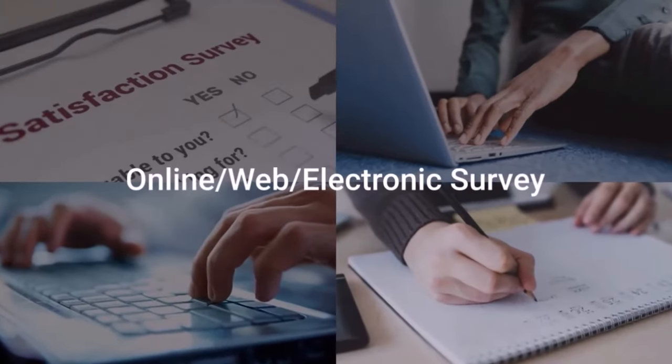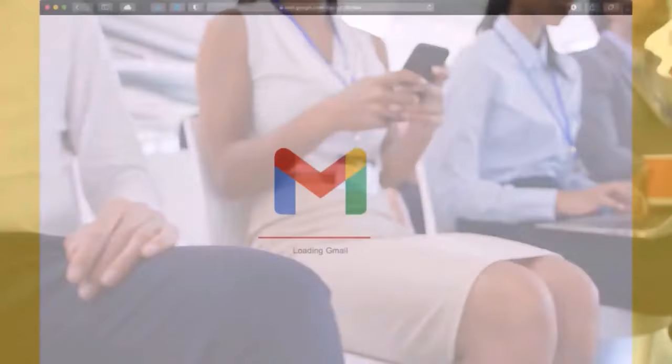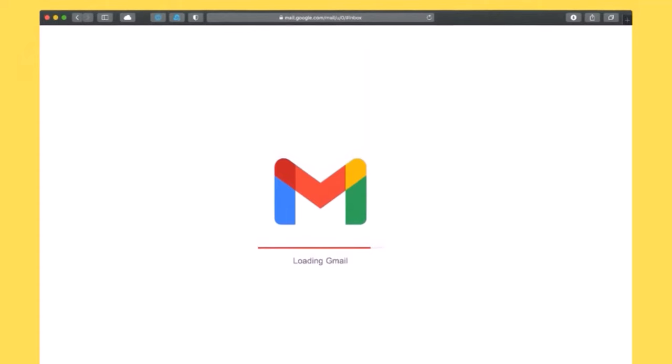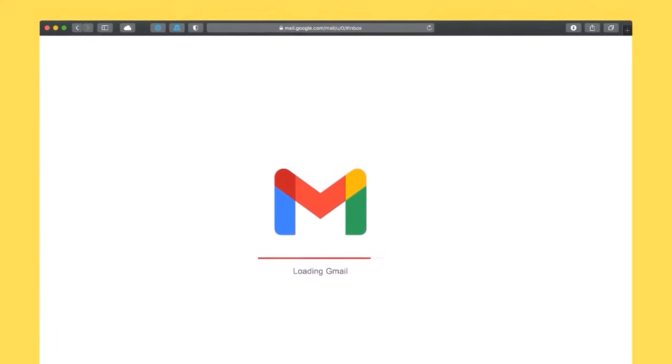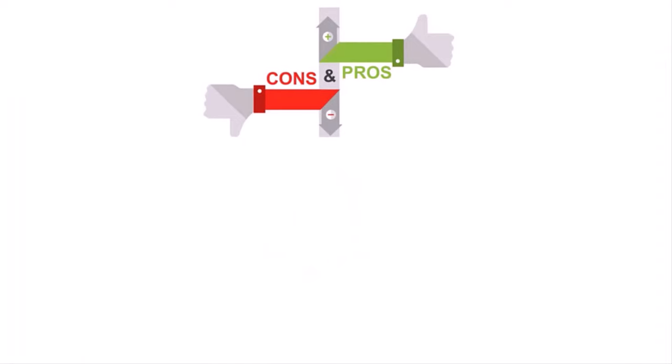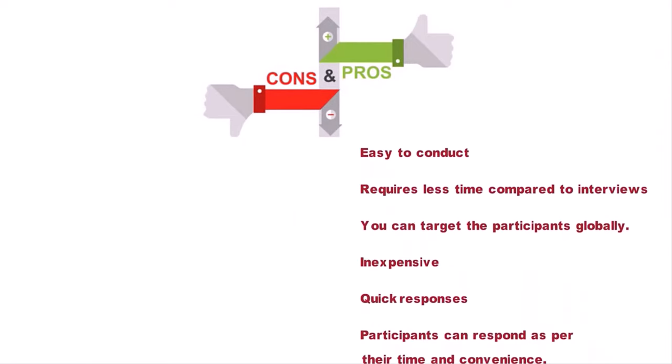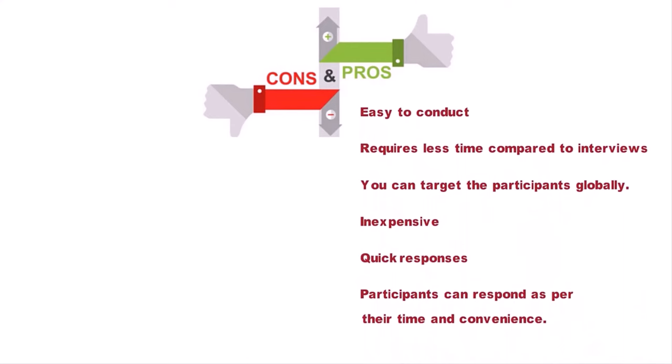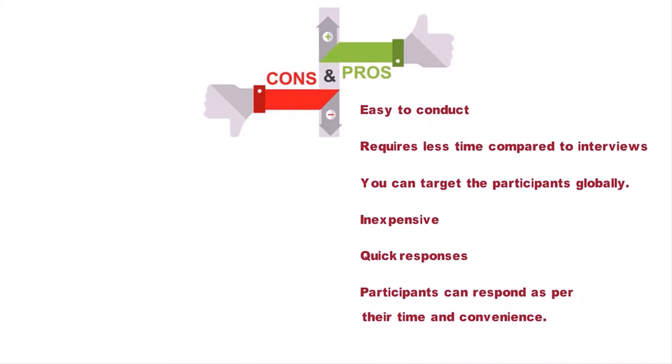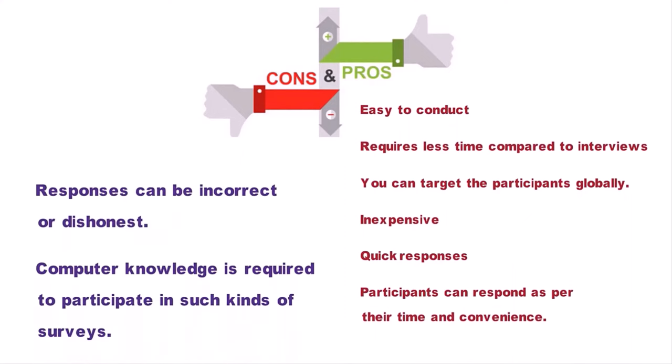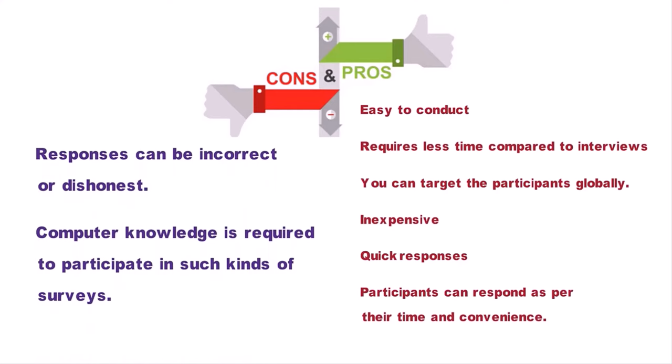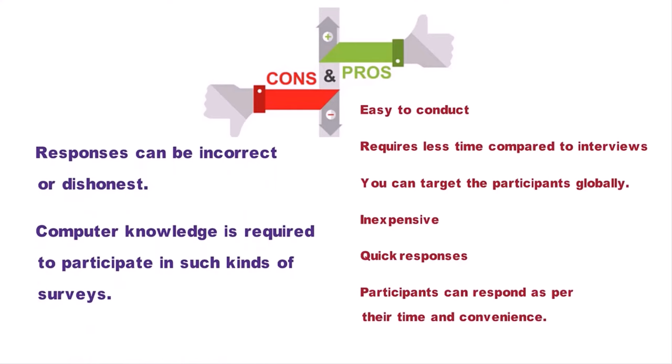3. Online, web, electronic survey. Computers, laptops, and mobile phones play a significant role in this kind of survey. A set of questions is sent through email and texts to a selected target sample, and participants respond to the questions. Pros: Easy to conduct. Requires less time compared to interviews. You can target the participants globally, inexpensive, quick responses. Cons: Responses can be incorrect or dishonest. Computer knowledge is required to participate in such kinds of surveys. Some questions are difficult to analyze. Incomplete answers from the participants. Participants can respond as per their time and convenience.